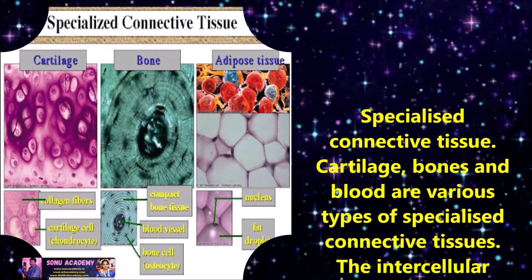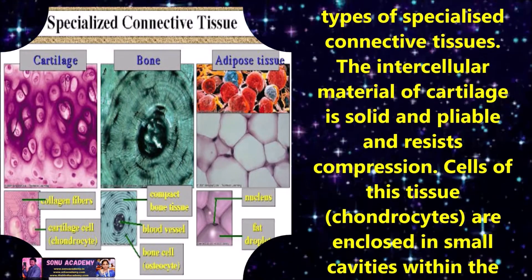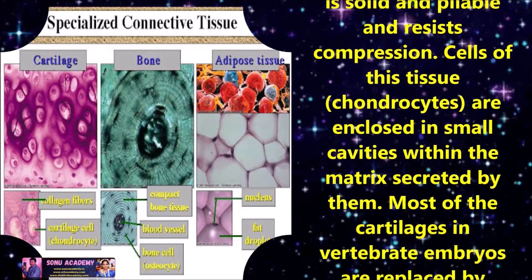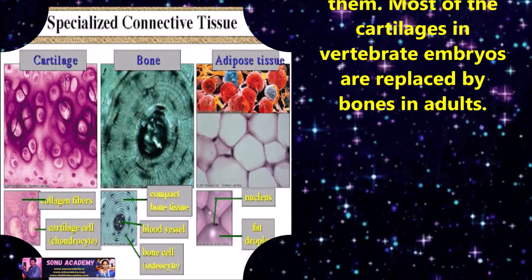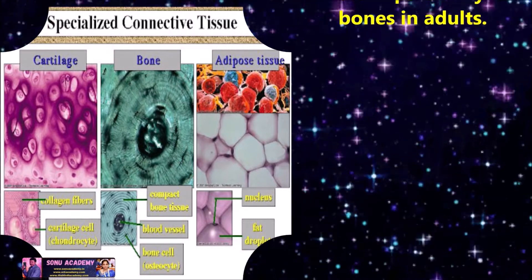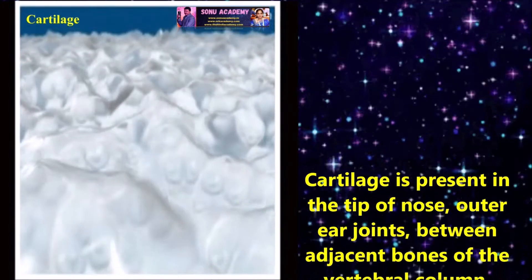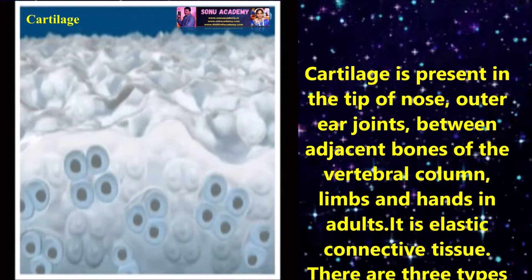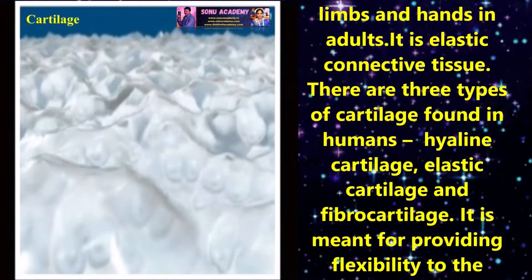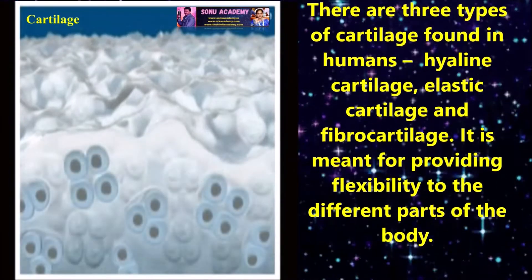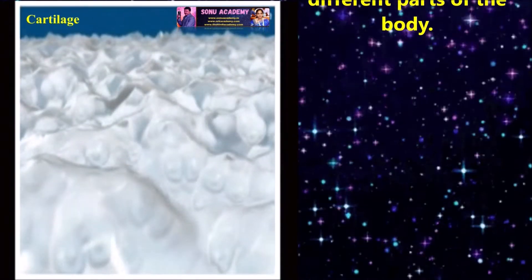Cartilage, bone and blood are the various types of specialized connective tissue. The intercellular material of cartilage is solid and pliable and resists compression. Cells of these tissues are enclosed in small cavities within the matrix secreted by them. Most of the cartilages in invertebrate embryos are replaced by bones in adults. Cartilage is present in the tip of the nose, outer ear, joints, between adjacent bones of the vertebral column, limbs and hands in adults. It is an elastic movement tissue. There are three types of cartilage found in humans: hyaline cartilage, elastic cartilage and fibrocartilage. Cartilage provides flexibility to different parts of the body.